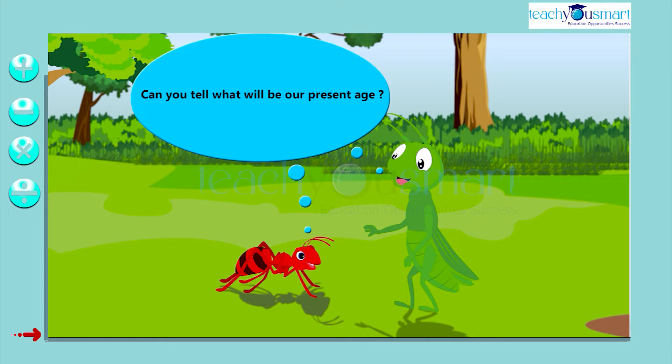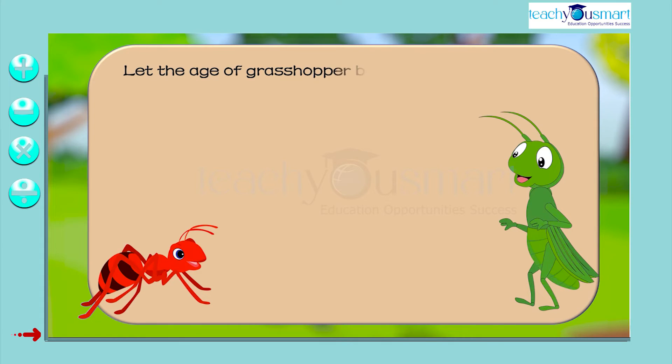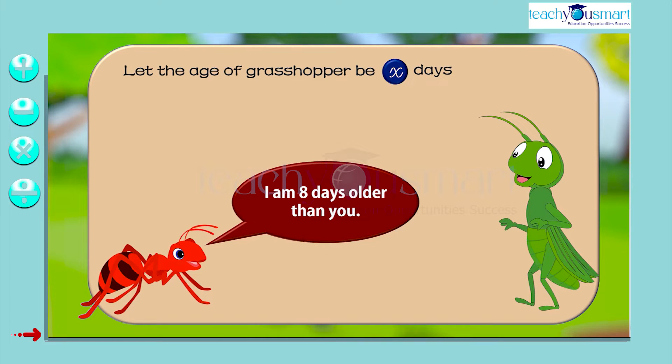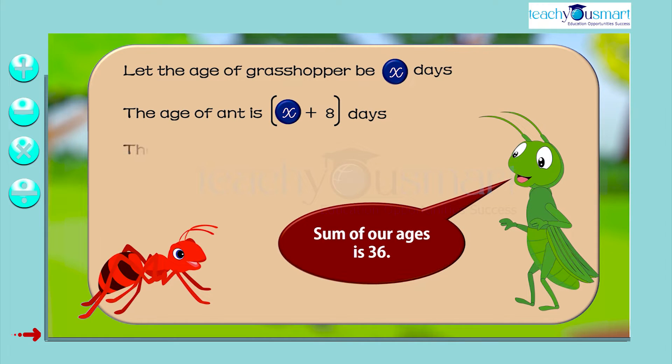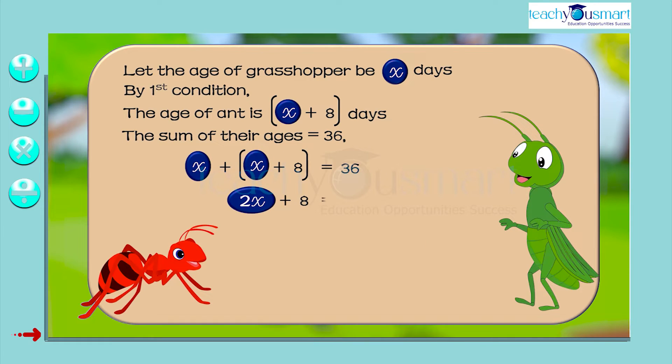How can we solve their question? Let's take the age of grasshopper be x days. Then, by the first condition, the age of the ant is x plus 8 days. Since the sum of their ages is 36, x plus x plus 8 equals 36. That is, 2x plus 8 equals 36.